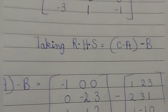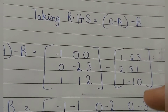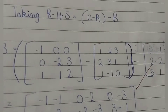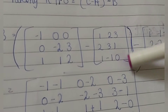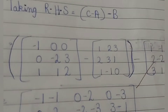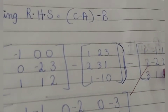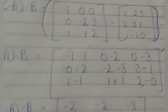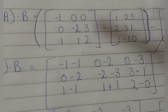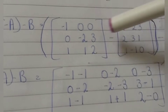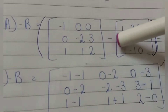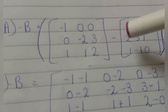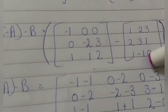For the right hand side (c minus a) minus b, we have c value: minus 1, 0, 0, 0, minus 2, 3, 1, 1, 2. A value is: 1, 2, 3, 2, 3, 1, 1, minus 1, 0. And b value: 1, minus 1, 1, 2, minus 2, 2, 3, 1, 3. Now solving the inner bracket c minus a: minus 1, minus 1, 0, minus 2, 0, minus 3, 0, minus 2, minus 3, then minus 2, minus 3, 3, minus 1, minus 1, minus 5, plus 1, 1.